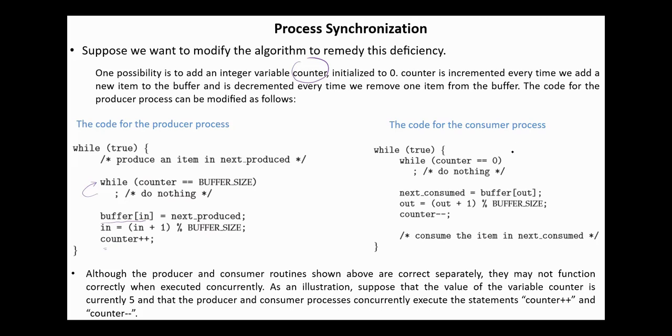In the consumer code, we check if the counter equals zero. In this case, since the buffer is empty, we have to wait. Otherwise, an item is consumed from the buffer into the next consumed. Out is incremented by one mod buffer size, and counter is decremented by one.